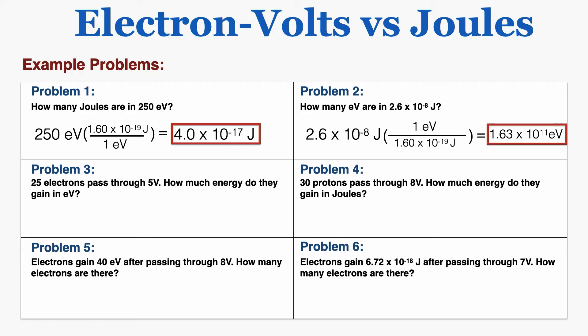Problem three says 25 electrons pass through 5 volts — how much energy do they gain in electron volts? The number of electron volts gained is just the number of electrons multiplied by the number of volts, so that's 25 times 5, which equals 125 electron volts.